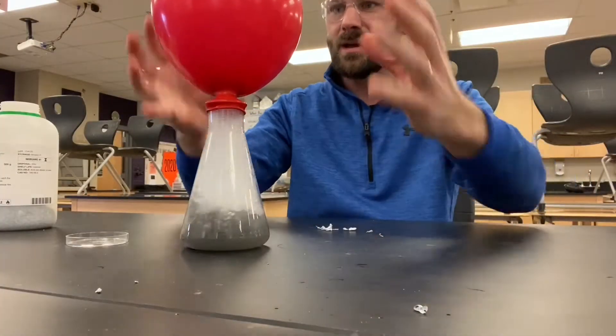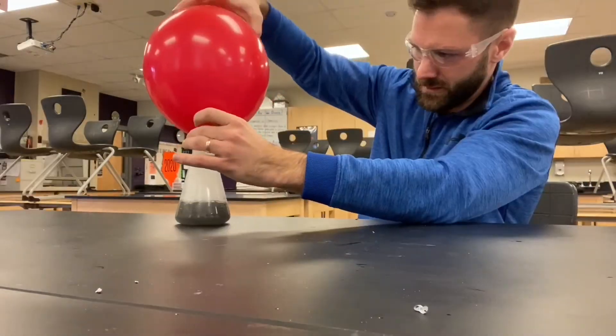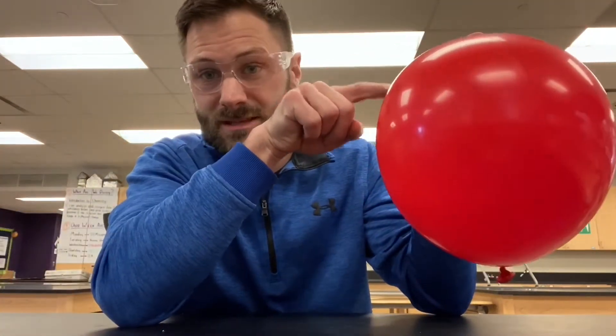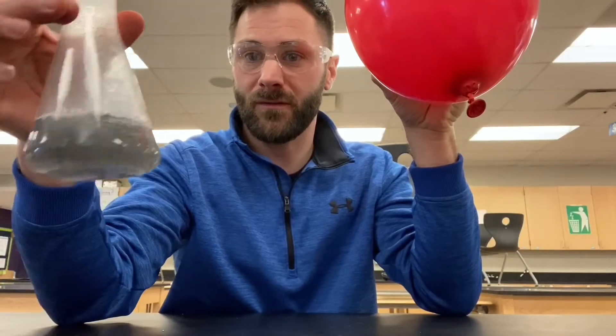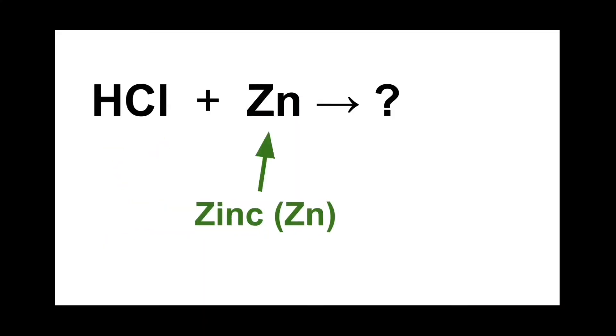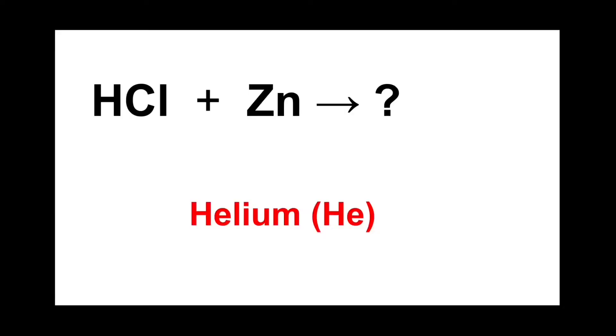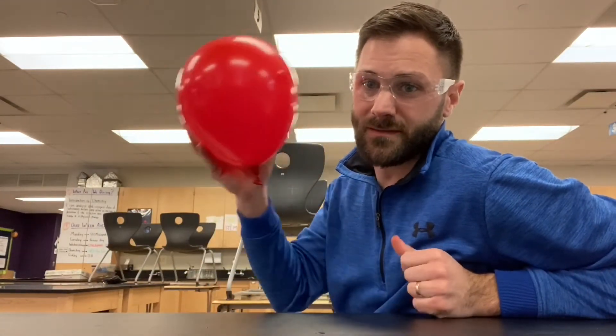Remember, HCl plus zinc down here — something's getting produced in here. It's a gas. Now we can do two tests to try to figure out what this is, but I first want to stress: whatever is in this balloon couldn't have ended up there if it wasn't in our reactants to begin with. HCl plus zinc is what we reacted in this Erlenmeyer flask. That means we had hydrogen, chlorine, and zinc — which means we couldn't have something in this balloon that wasn't there to start with. We can see there's something filling the balloon.